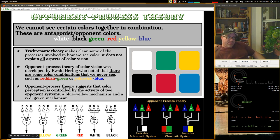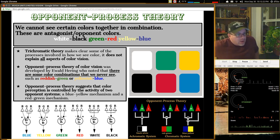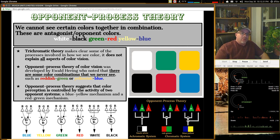Opponent process theory is the second theory. So we had the first one, trichromatic analysis opponent process theory. It states that we cannot see certain colors together in combination. These are what's called antagonist, or opponent colors. So antagonist opponent colors. White and black, green and red, and yellow and blue. This is very confusing for some people. So kind of stick with me here. If you need to pause the video and write some things down as we go, do that. And then we'll talk through it.